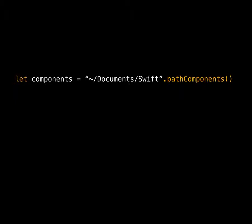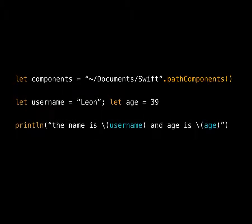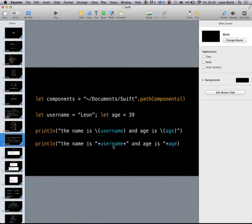If you call methods that return values, don't forget to catch them with `let` because they'll be a constant and won't change. If you declare values and want to print them into a string, you no longer need format specifiers. You can literally write them out in a PHP style — putting them inside parentheses escaped with an escape character — or if you want to be more JavaScript-like, you can add in the details like so.